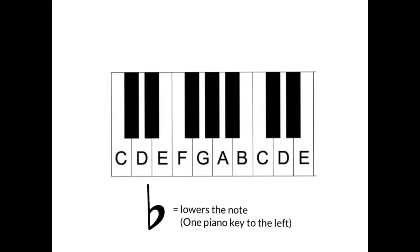Now where it gets funky is with C and F. If we have F right here and we want to play F flat, one key to the left — there's no black key, so the next key to the left would be this note right here. So F flat is the same as regular E. The same goes for C — one key to the left for C flat would be this note. So B natural and C flat are the same note.